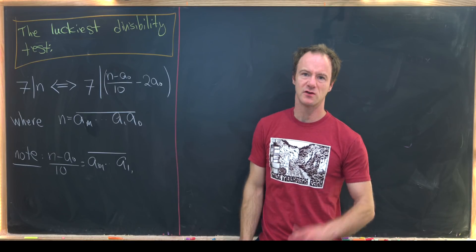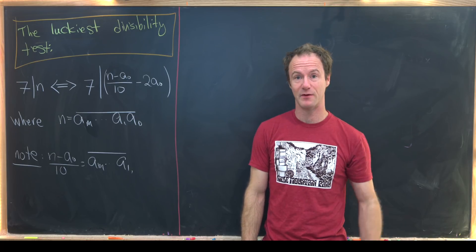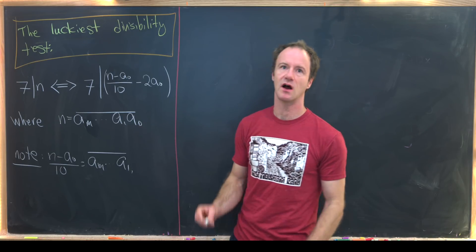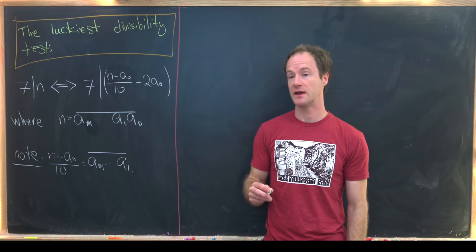I'll put the line over it just to say that we're meaning that this is the number made up of those digits. So these numbers are obviously between zero and nine.